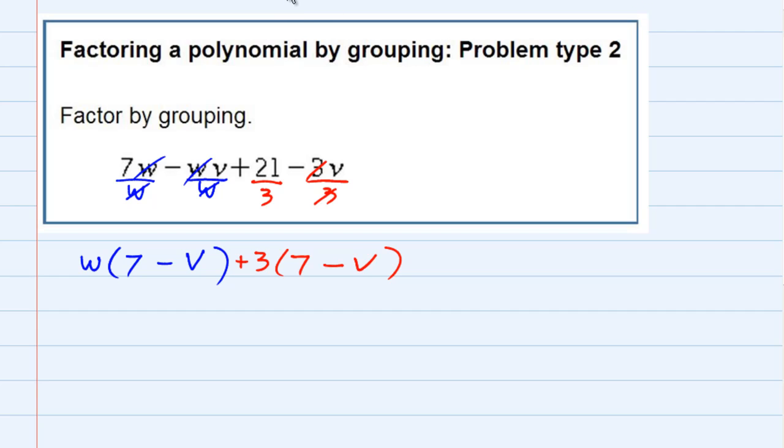So the two terms that I have left still have a common factor. This term and this term, they both have a 7 minus v.